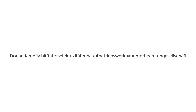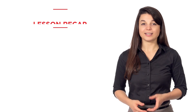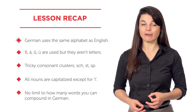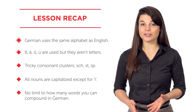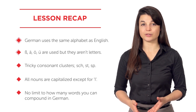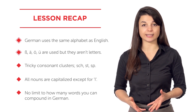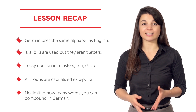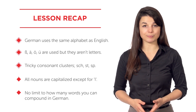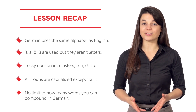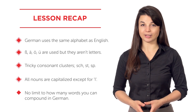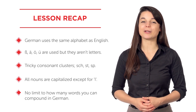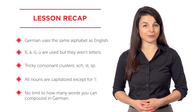Okay, let's recap what we've learned. In this lesson, you learned that German uses the exact same alphabet as English. There are four additional characters in use, although they aren't recognized as distinct letters. You also learned that there are some tricky consonant clusters to look out for. You then learned that all nouns except for 'I' are capitalized in German. And finally, there is no limit to how many words you can compound in German.